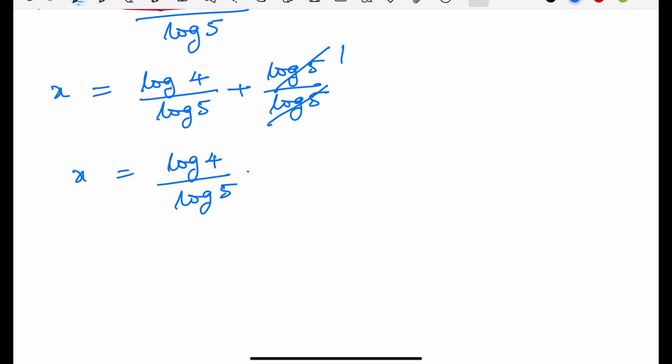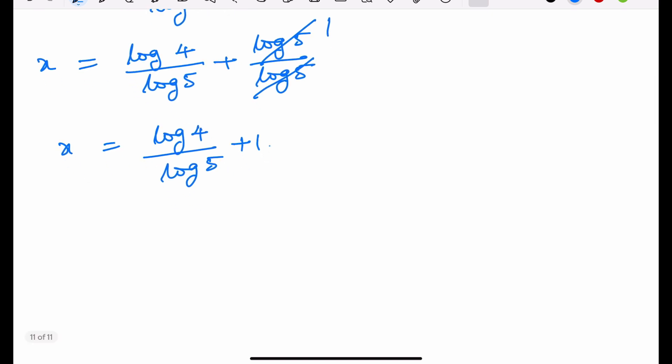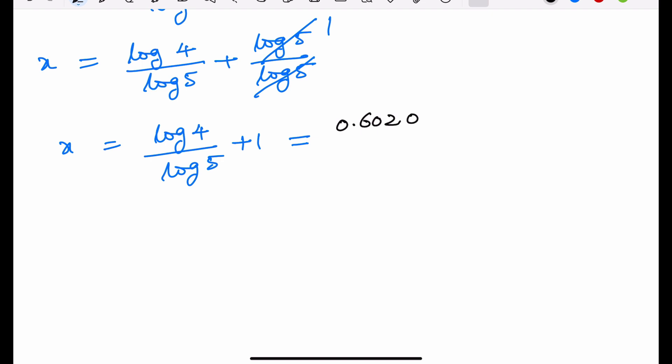Substituting the values: log(4) = 0.6020 and log(5) = 0.6989, we get x = 0.6020/0.6989 + 1,